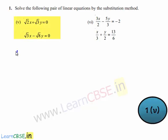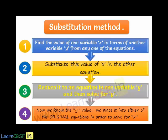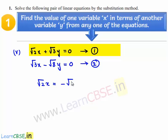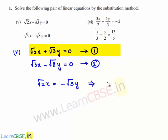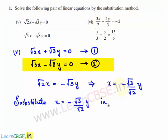Coming to the fifth problem, which is root 2 times x plus root 6 times y is equal to 0. Let this be equation number 1. And root 3·x minus root 8 times y is equal to 0. Let this be equation number 2. Now, the first equation can be written as root 2·x is equal to minus root 3·y, which implies x is equal to minus root 3 divided by root 2 times y. Let us substitute this value of x in equation number 2.